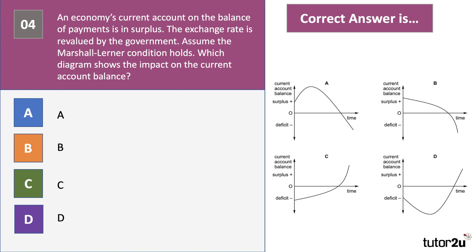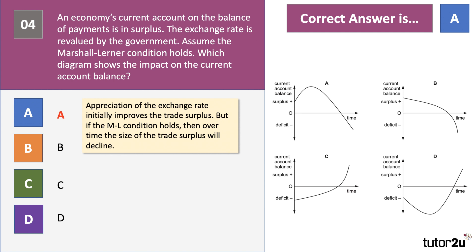Question four: a country's current account is in surplus and the exchange rate is revalued by the government. Assuming the Marshall-Lerner condition holds, which diagram shows the impact on the current account balance? This is a reversal of the usual question about devaluation and the J-curve effect. The correct answer is A. Appreciation of the exchange rate initially improves the trade surplus — particularly if elasticity of demand for imports and exports are low — but if the Marshall-Lerner condition holds and elasticities are greater than one, over time the surplus will decline. It can't be C or D because the current account starts in surplus, not deficit — you get an N-curve effect rather than a J-curve.